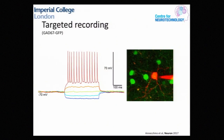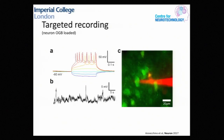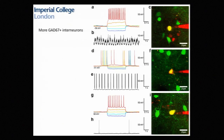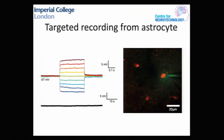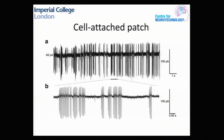Here are a few examples: a GAD67-positive interneuron we've done some recordings from. It also works with AM dye labeling — the old method before we got GCAMP6 — and we've used that to do recordings from various cells as well. It works systematically for different cell types, and also works on astrocytes. We filled the pipette with Alexa 488 and targeted sulforhodamine-labelled astrocytes. It's quite useful for cell-attached recordings as well, and the hit rate is actually higher for cell-attached.